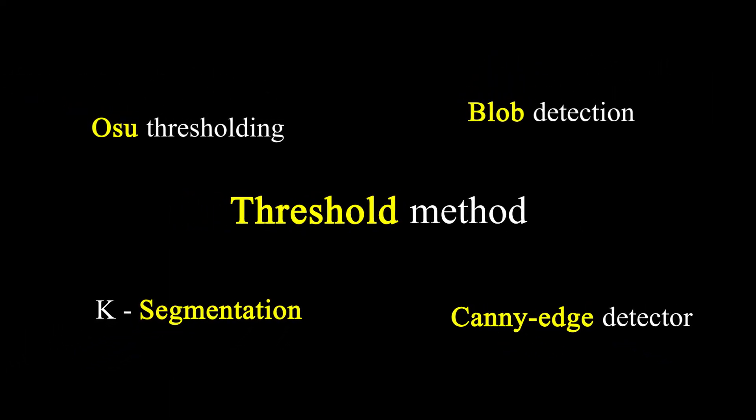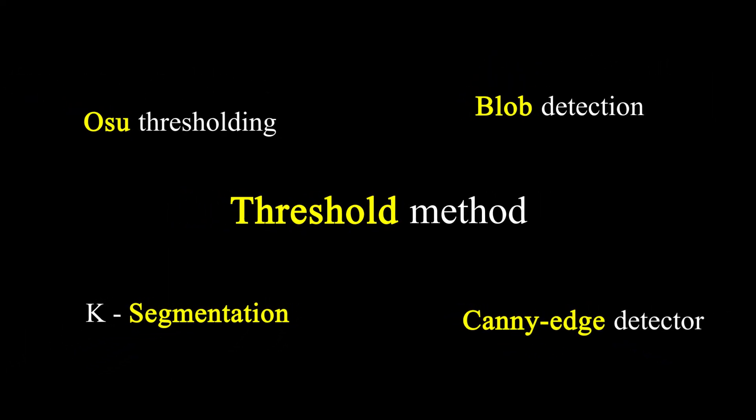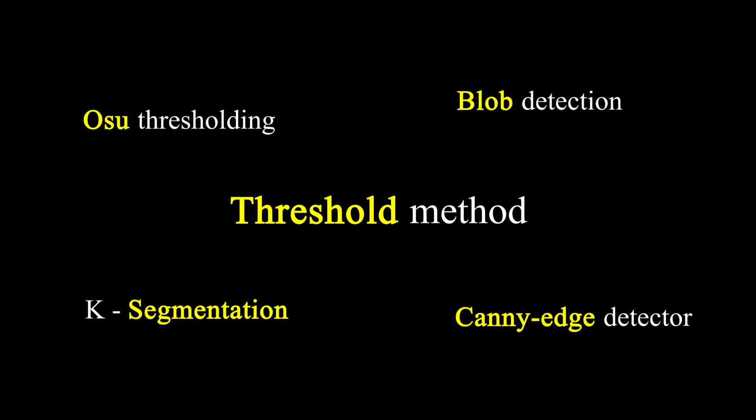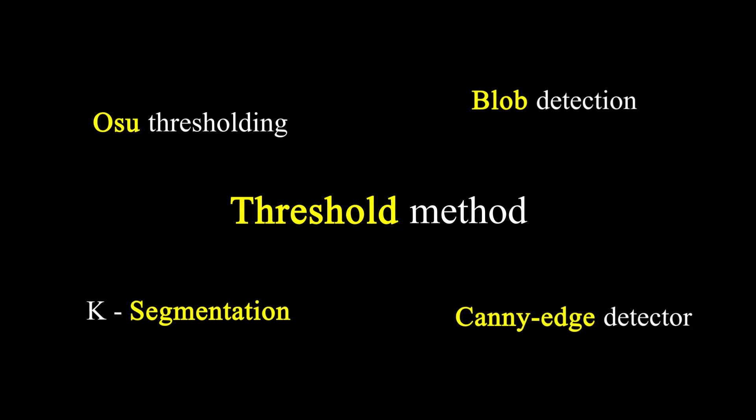This method relatively works well here but might not with other types of images. Other methods do exist to extract a specific part of an image like Otsu Thresholding, K-means Segmentation, Blob Detection, Canny Edge Detector and so on, but we will stick with this simple one.